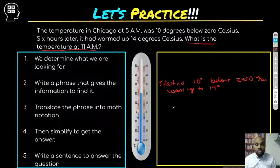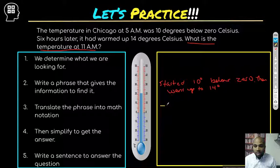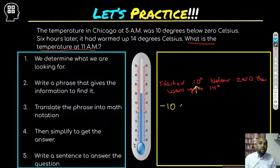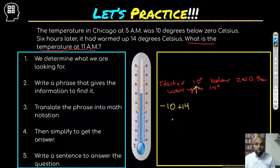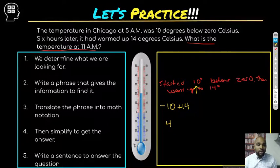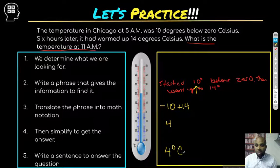Translate the phrase into math notation: we started at negative 10, then went up 14 degrees — going up means increasing, moving right on the number line, so we add 14. Now simplify: negative 10 plus 14. When adding integers we take the sign of the biggest integer, which is positive, so we get positive 4 — that's 14 minus 10. The temperature is 4 degrees Celsius at 11 a.m.